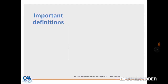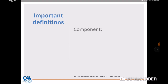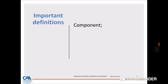Some important definitions: a component is defined in ISA 600 as an entity or a business activity for which group management or component management prepare financial information to be included in the group financials. A component could be your subsidiary or your associate.